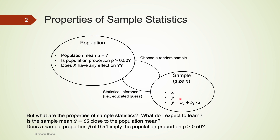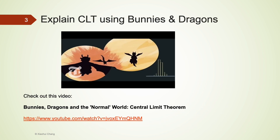Because sample statistics are so useful in understanding population parameters, in this video we will see how we can better understand the properties of those sample statistics. For example, we may be interested in answering: Is the sample mean x-bar of 65 close to the true population mean? Does the sample proportion p-bar of 0.54 imply the population proportion p is more than 50%? The properties, or more specifically, the sampling distributions of the sample statistics, can be explained using the Central Limit Theorem, also known as CLT.